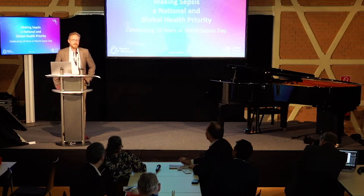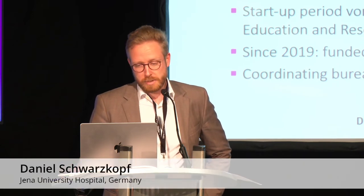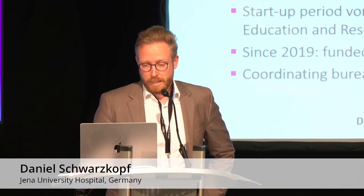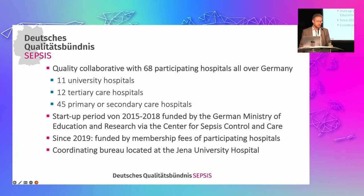Hello everybody, it's a pleasure to talk to you about some experiences we have made in the German Quality Network Sepsis. I want to start with introducing the quality network to you — it's a quality collaborative currently with almost 70 participating hospitals. We have every kind of hospital, from university hospitals to small rural hospitals with 150 beds. We started in 2015 and were initially funded by the German Ministry of Education and Research, and since 2019 we managed to keep the work going with membership fees by the participating hospitals.